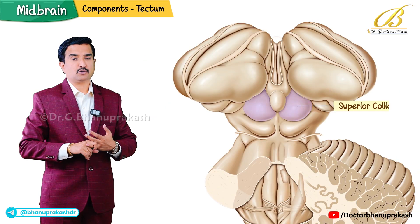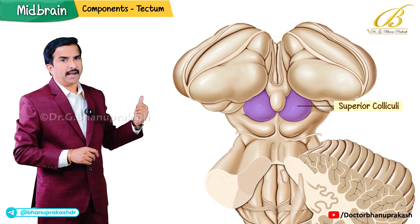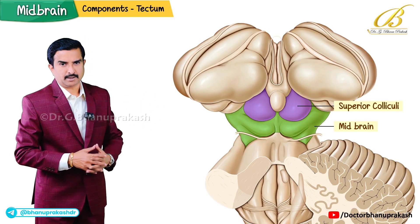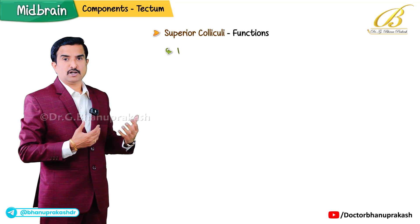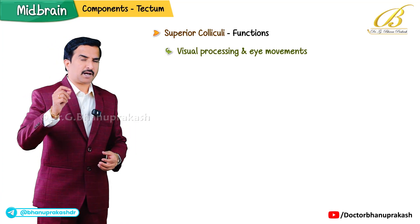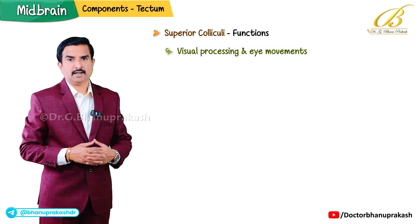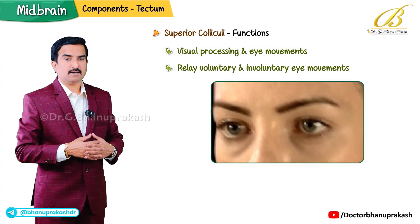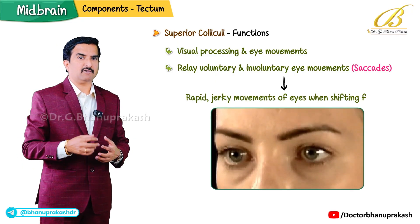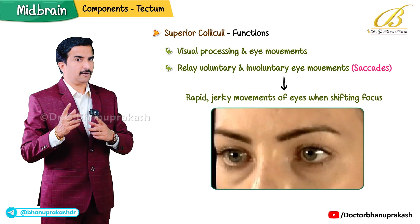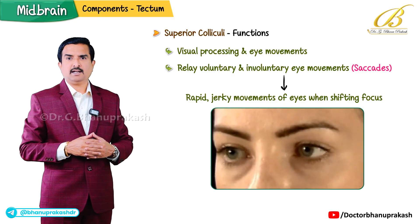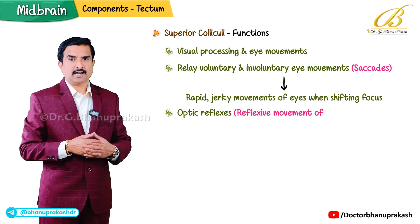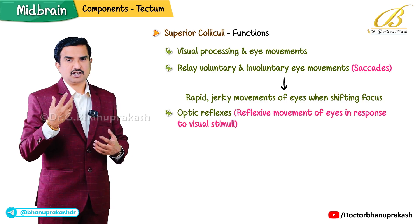The superior colliculi are paired structures located on the dorsal side of the midbrain. They are involved in visual processing and eye movements. The primary function of the superior colliculi is to relay voluntary and involuntary eye movements, such as saccades, which are rapid jerky movements of the eye when shifting focus. They are also responsible for optic reflexes such as reflexive movement of the eyes in response to visual stimuli.